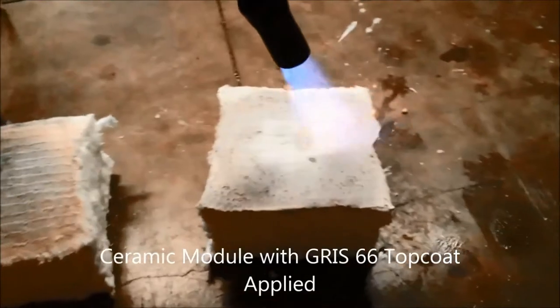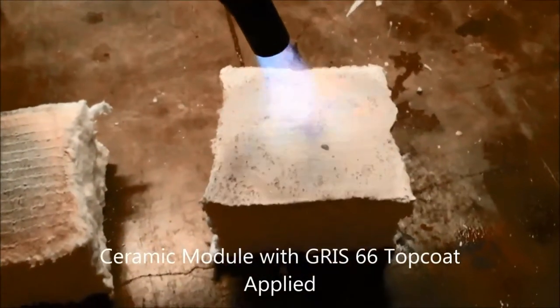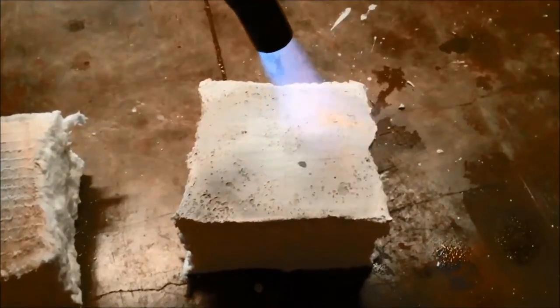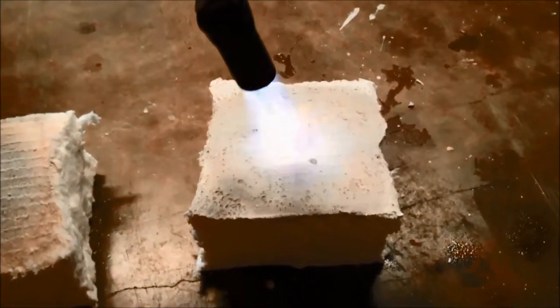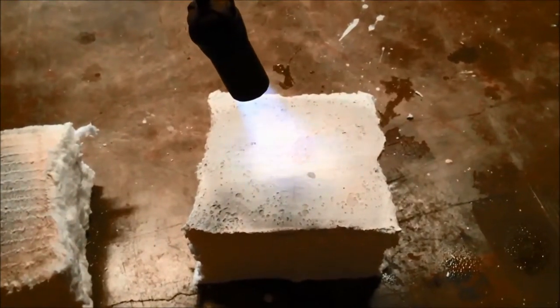Here is a traditional fiber ceramic module, only coated with a Grizz 66 top coat. If you notice, that top coat acts like a mirror, and it's pushing the heat away from the module and keeps it in the unit, which is going to help the fuel consumption process.